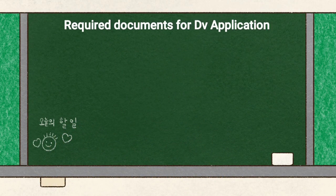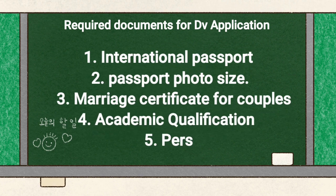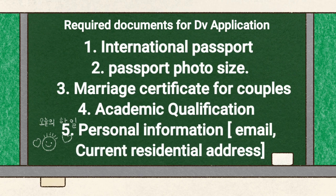The number one document you need to have is your international passport. You need to have an international passport before you go through this application process. When you are applying, you write your names, and the names you write should match the names in your international passport. If you don't have an international passport and you write names, and when you do the passport later there are differences, you will be answering difficult questions if you are fortunate to be among the winners and go for interview.